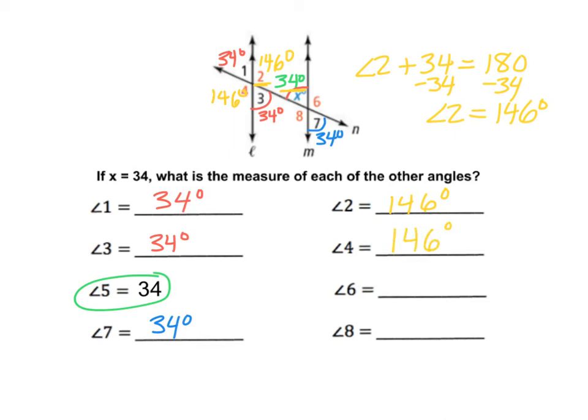For angle 6 and angle 8, we can find those in a few different ways. You could do corresponding. So angle 2 and angle 6 are corresponding angles, and corresponding angles are congruent, which means angle 6 is 146. Or you could also look at the fact that 6 makes a line with the 34. And 180 minus 34 is once again 146.